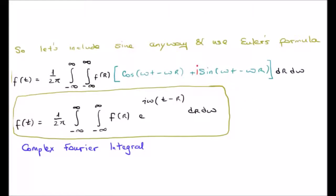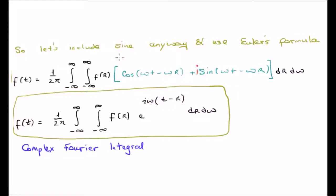We start with the function of t, small f of t. That's equivalent to having 1 over 2π, the double infinite integral, and our input function using the dummy variable r, multiplied by e to the i·omega·(t minus r), integrated dr dω. Of course if we never used the dummy variable and always had t, we would never have arrived at such an expression. What you're looking at here is known as the complex Fourier integral.